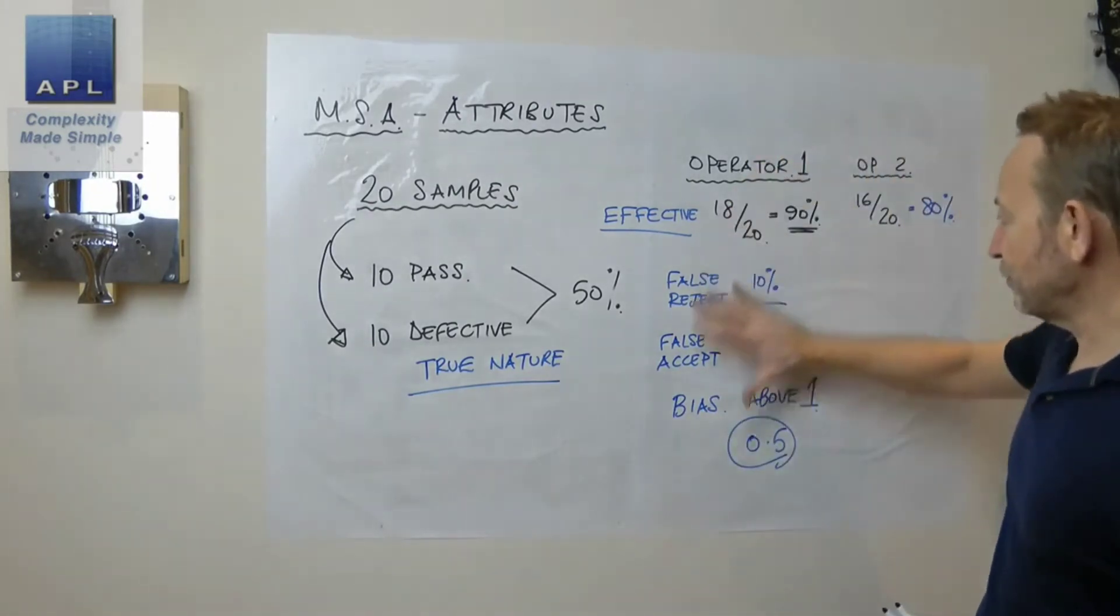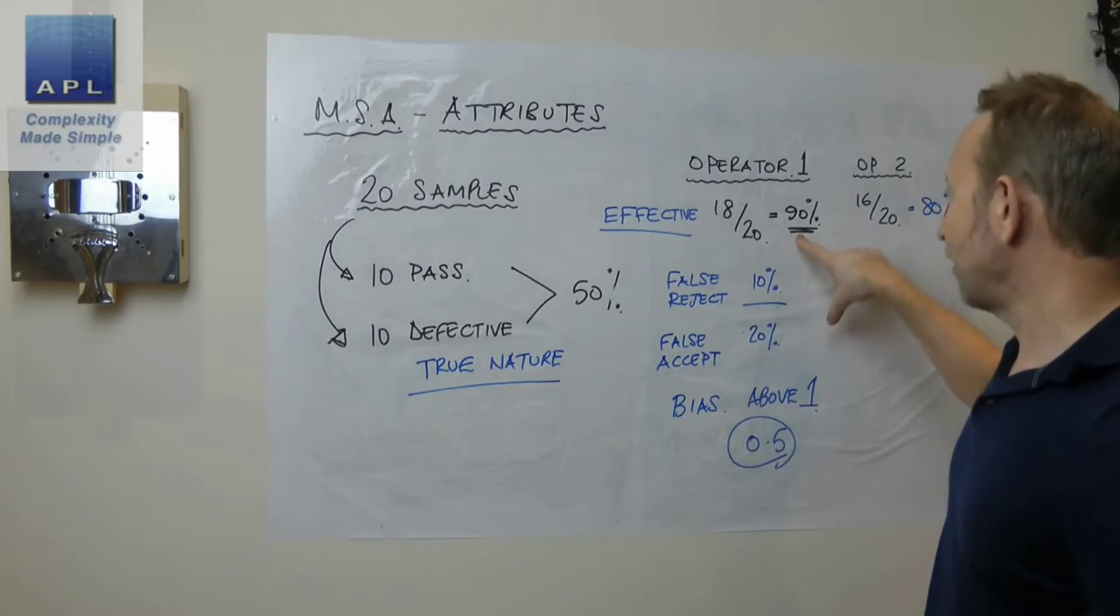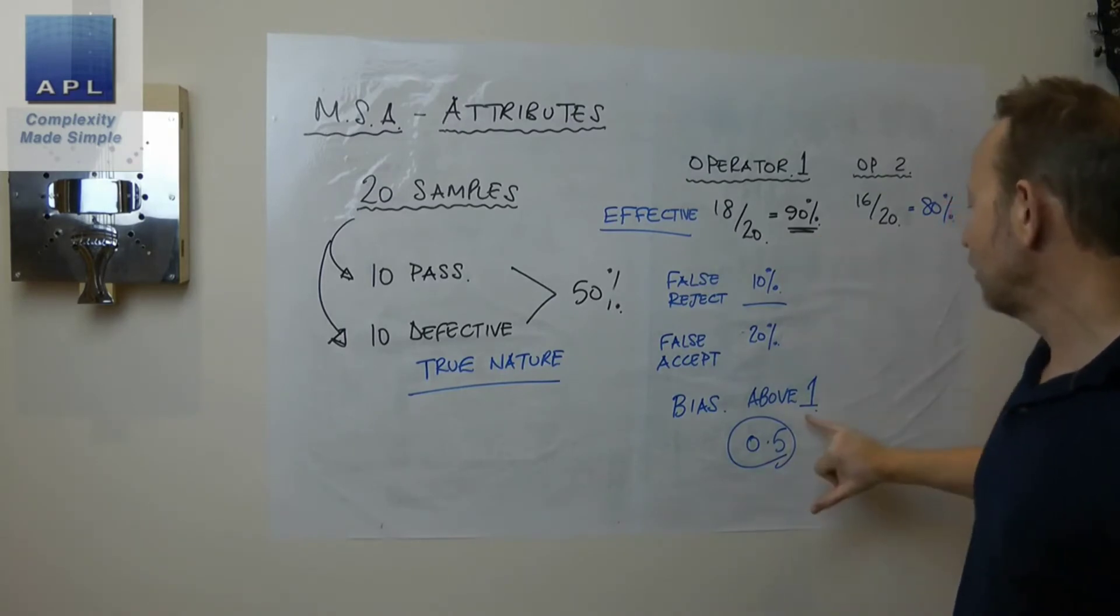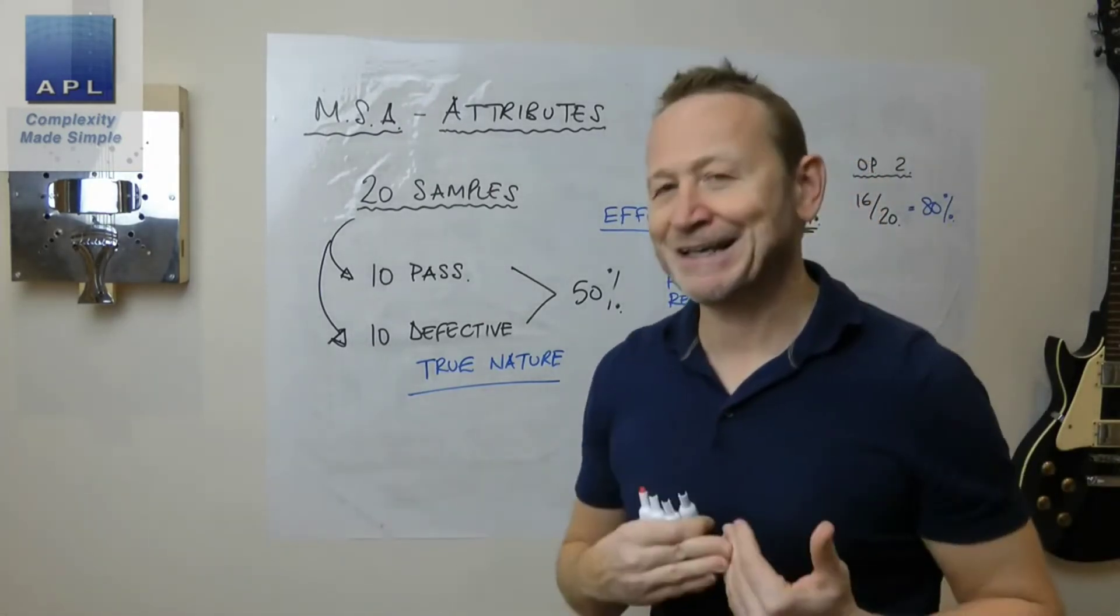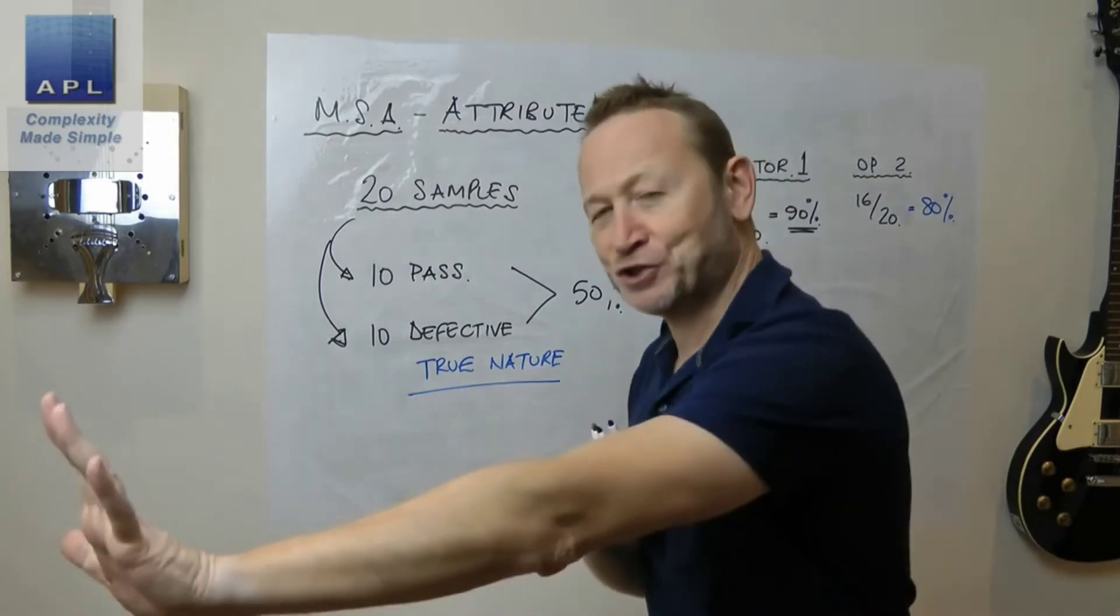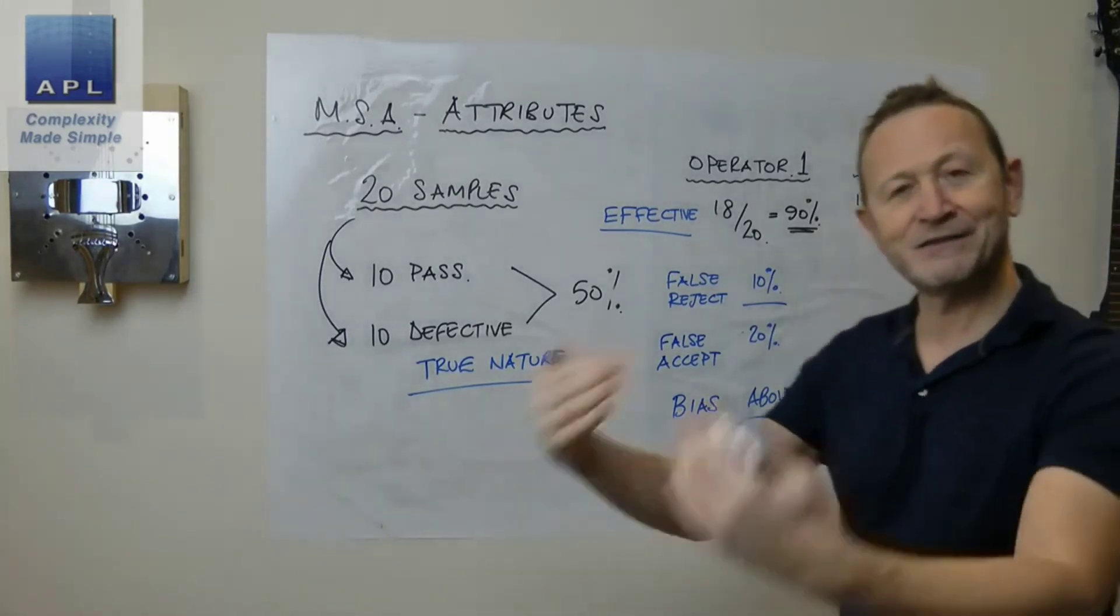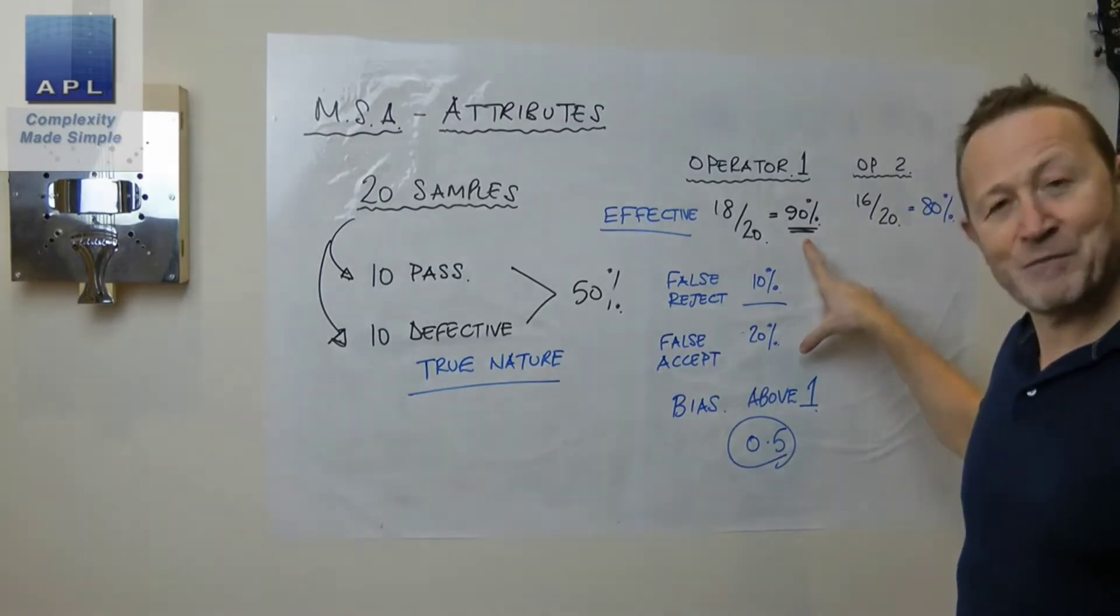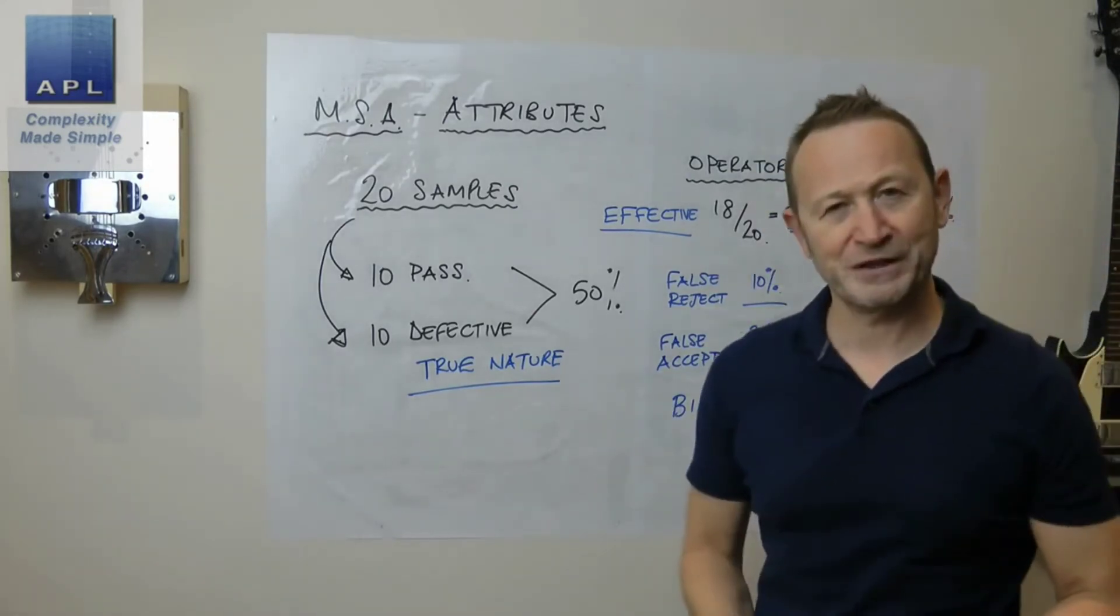So these are the statistics that you work out in an MSA for attributes. You check to see if they are overall effective, you check what the bias is, you check what the false reject rate and false accept rate is. You check that the bias, are they too tight, are they keeping the mistakes in house instead of pushing the mistakes to the customer. So as long as we're too tight, the mistakes that we're making stay in house, and that's the way you get around the problem of making a mistake 10% of the time, but we're keeping them all in house. That's really what you should be aiming for.